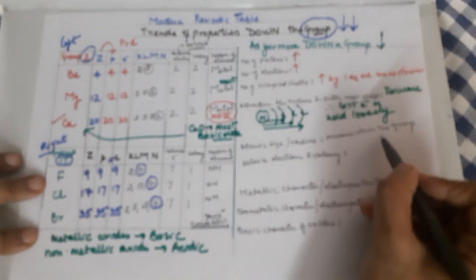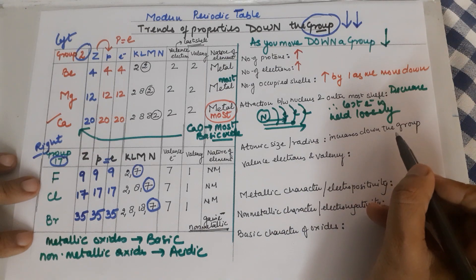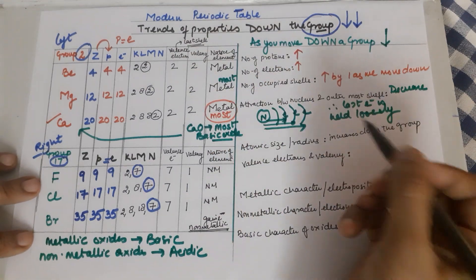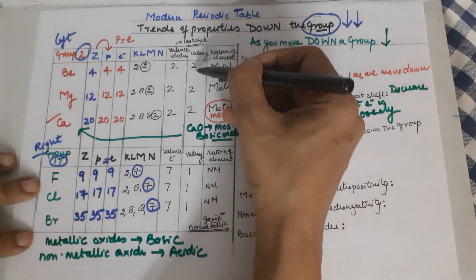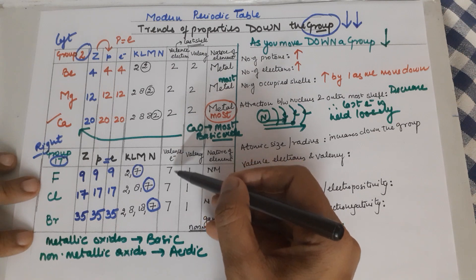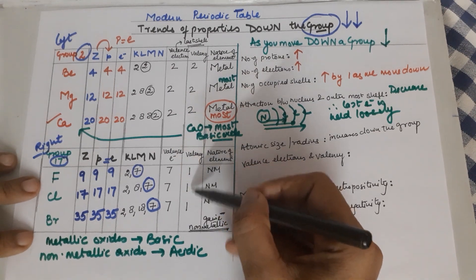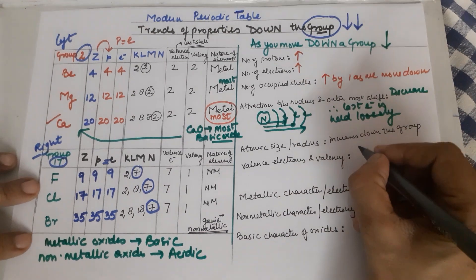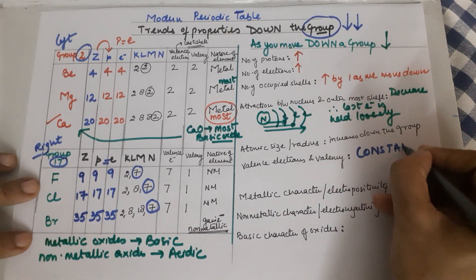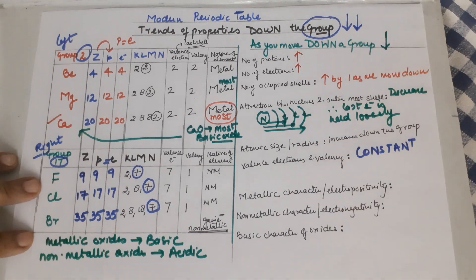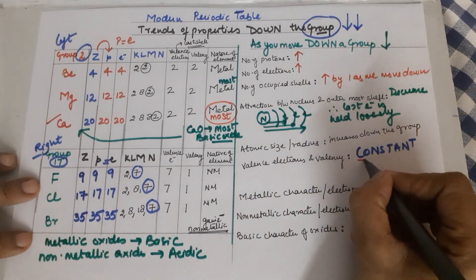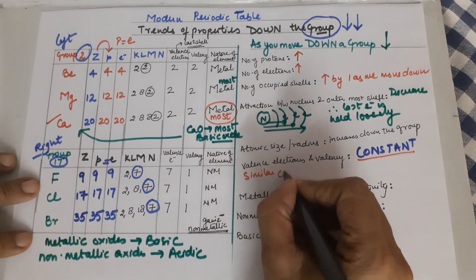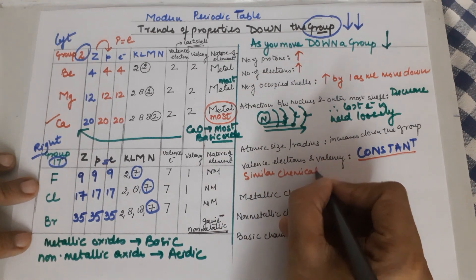Down the group, whether Group 2 or Group 17, as shells are increasing the atomic size or radius definitely increases. Now, valence electrons and valency: valence electrons are 2 in Group 2 — that remains constant — and valency is also constant. In Group 17, valence electrons are 7 and valency is 1 — also constant. Therefore, because valence electrons and valency are constant within a group, elements in a group have similar chemical properties.